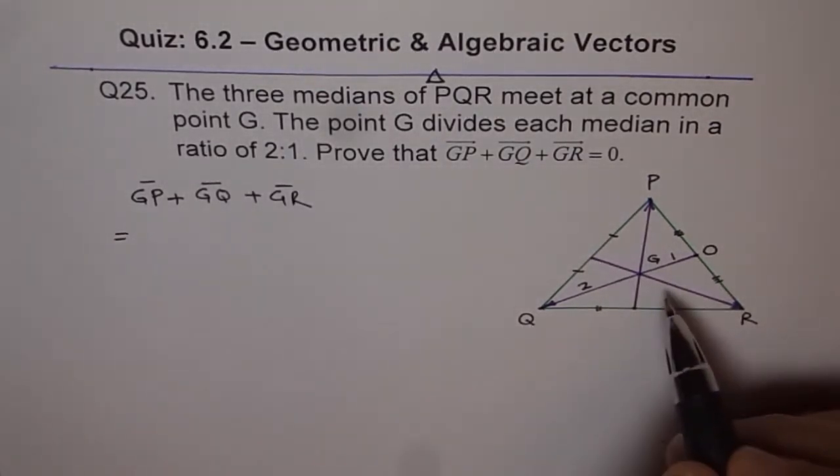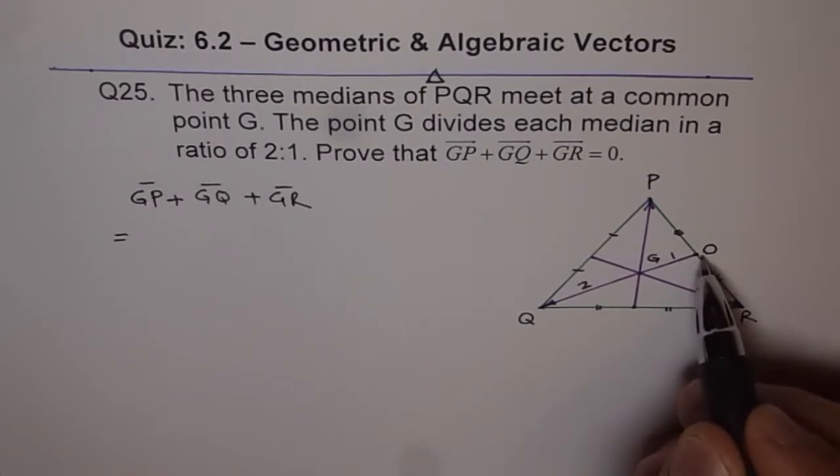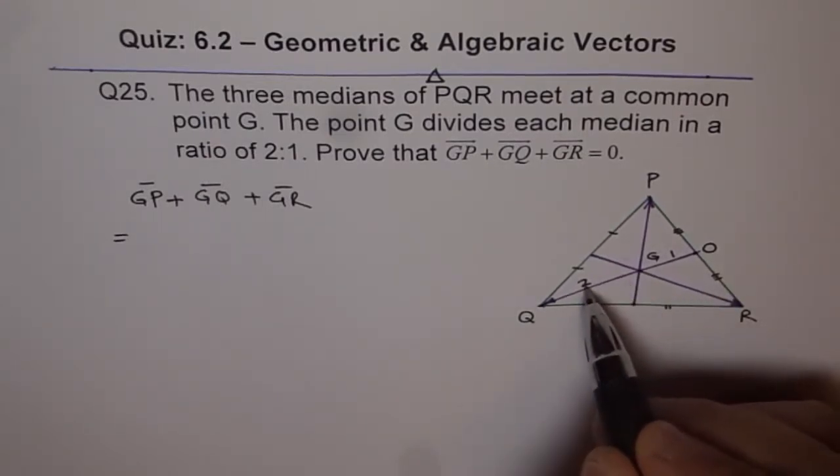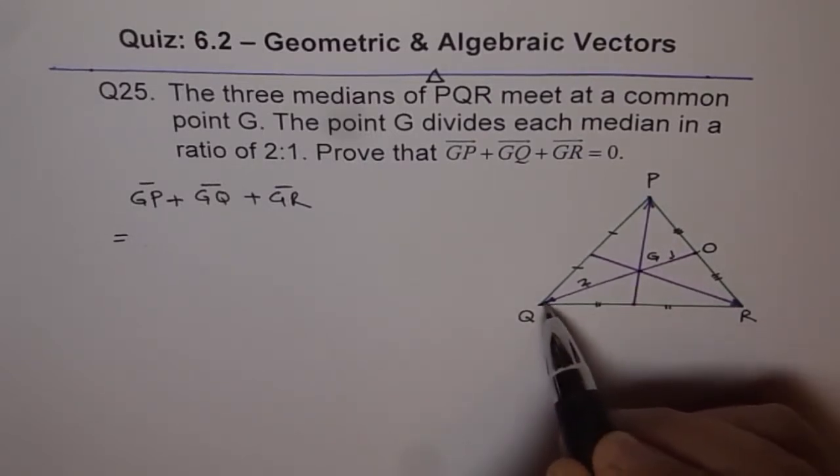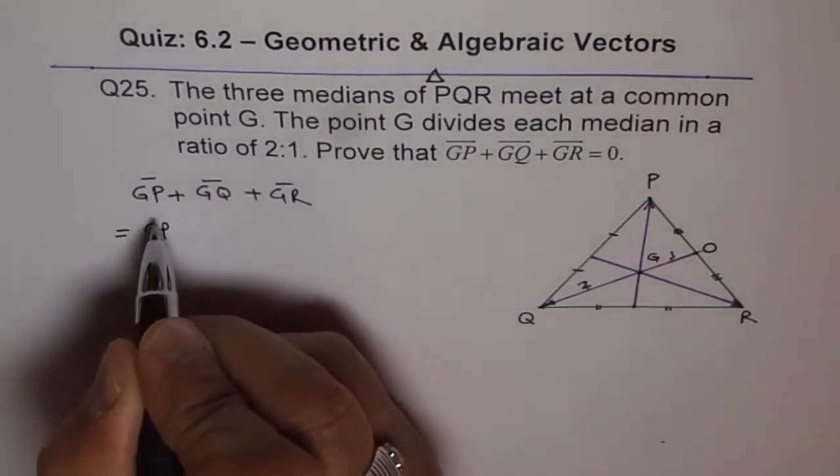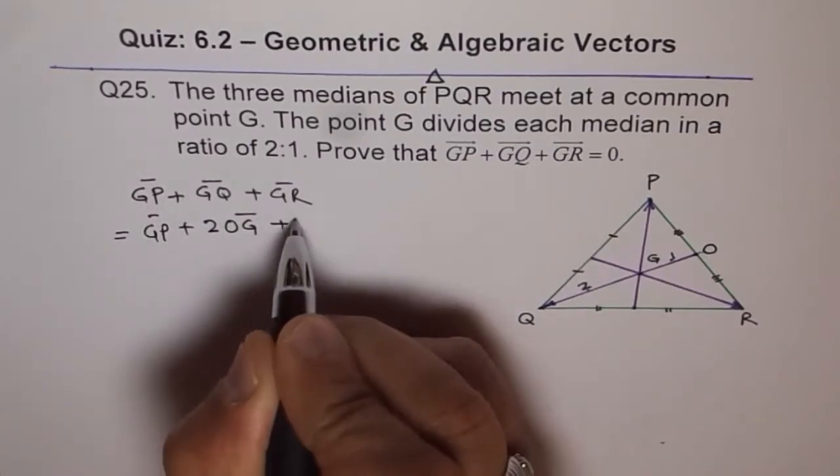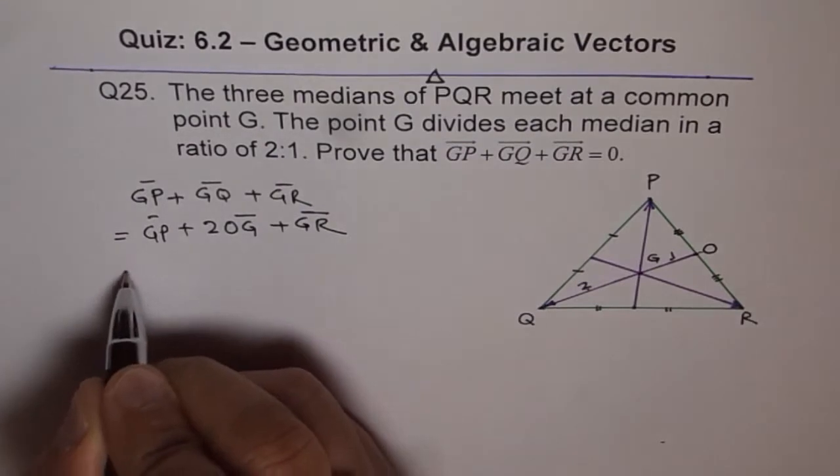So what we will do is that we will write GQ as 2 times OG, because this is in the ratio of 2 is to 1. So we will write GQ as 2 times OG. This is equal to GP plus 2 times OG plus GR. So this is our first step.